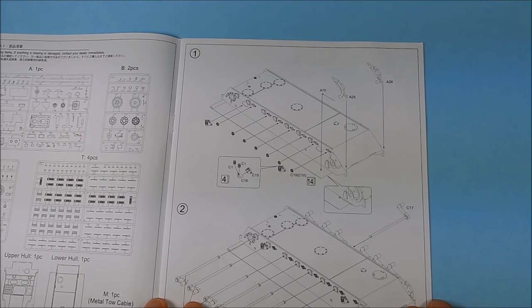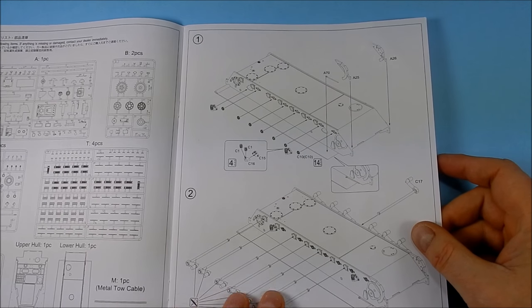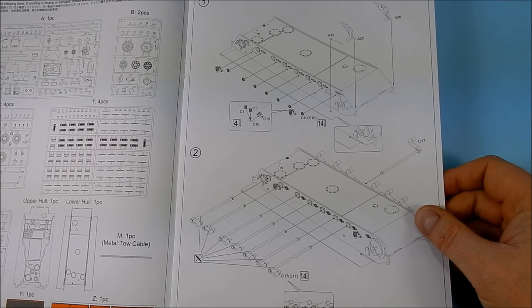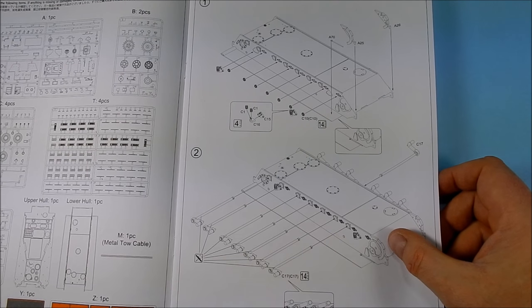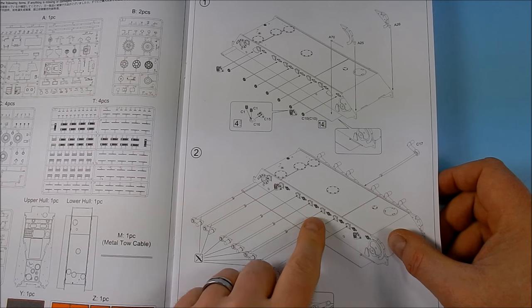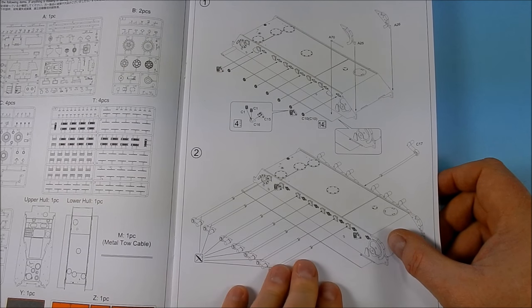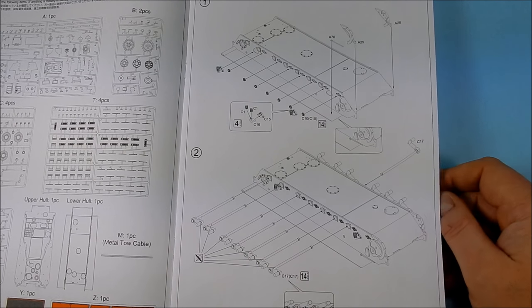Step one starts with the torsion bar suspension and some details. Much nicer done than the old Dragon set. And in reference to the Panzertrax Panther 2 booklet from Jensen Doyle, the location of the suspension arms are actually accurate. Whereas Dragon's are totally out to lunch. I'll show you when we get to the kit parts about that.